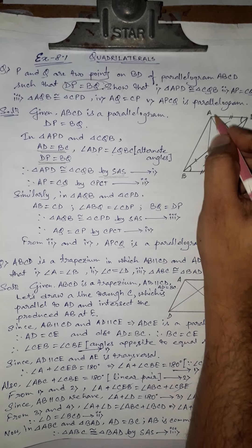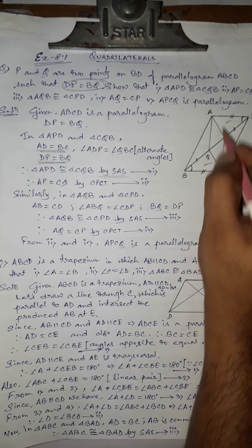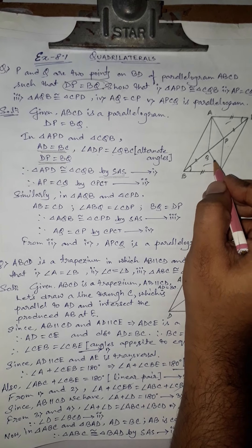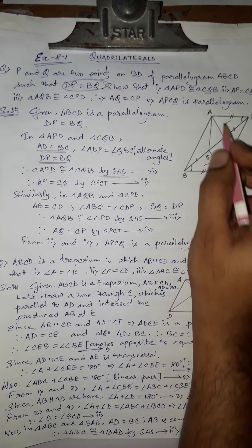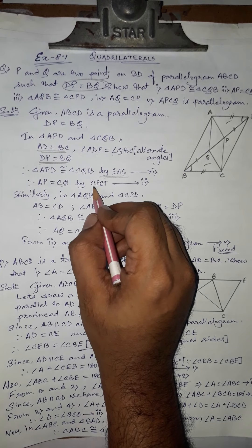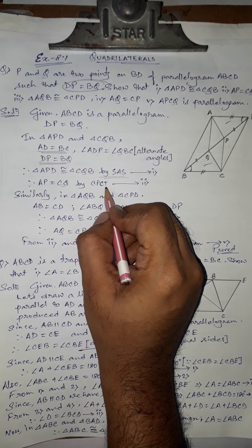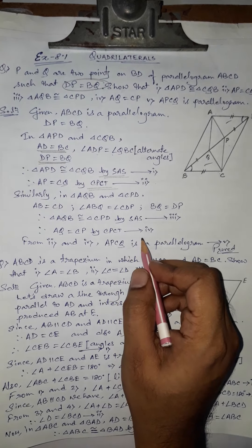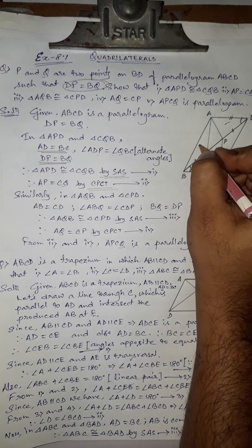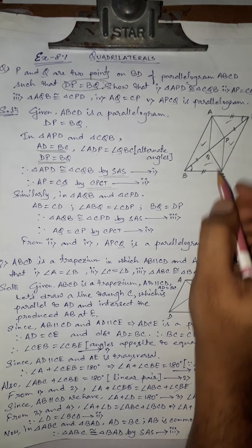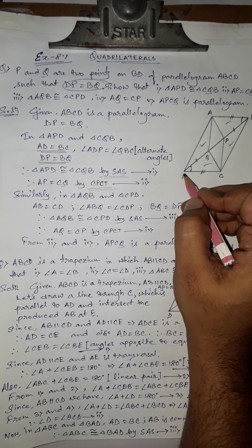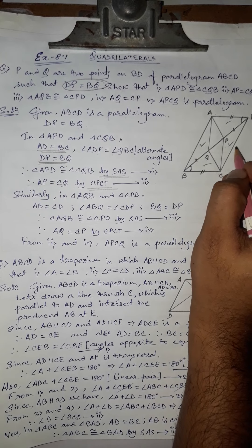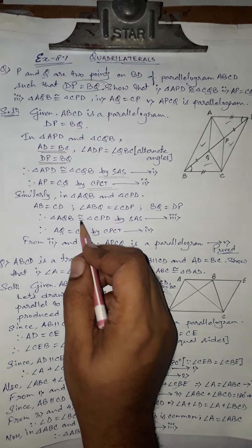When these two triangles are congruent, we can say AP and CQ are equal, because AP is a part of one triangle and CQ is the corresponding part of the other. By CPCT, AP equals CQ. That is number two.